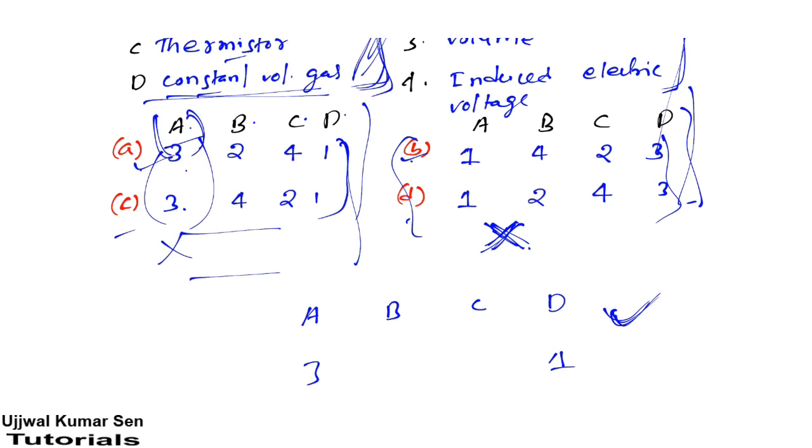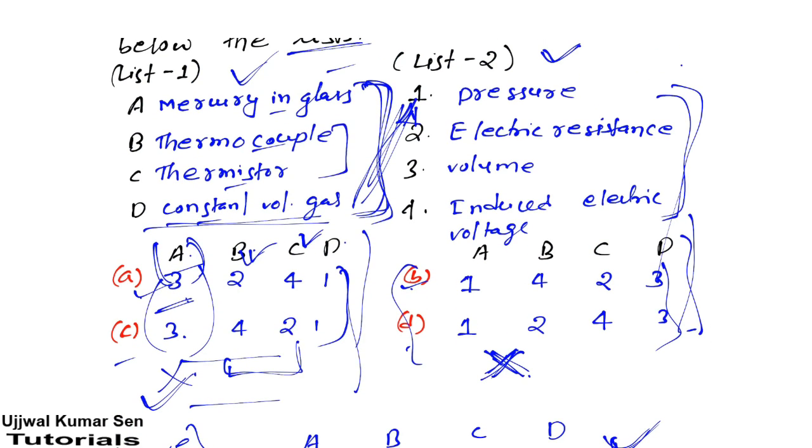Now we need to see B and C - just neglect option (b). In this way, you can save some time. Got it? Now let's look at B and C. You have to see B and C and find out the answer.